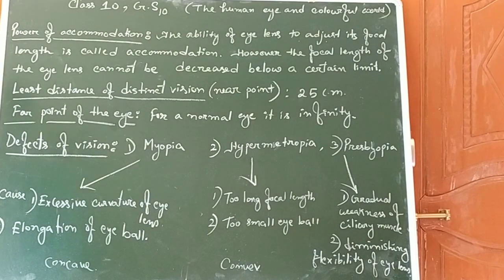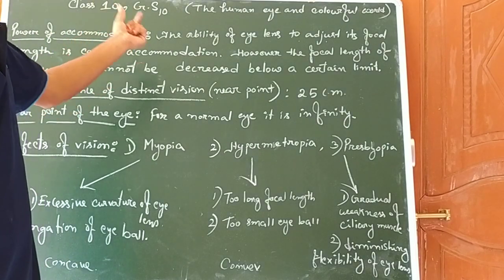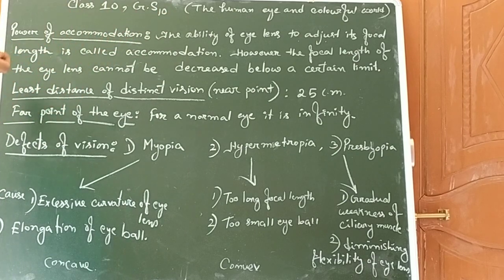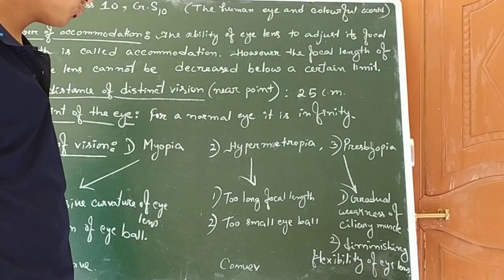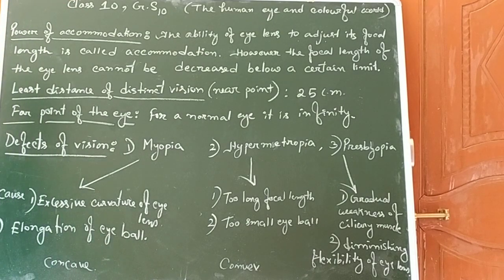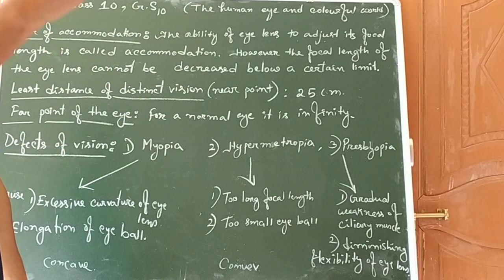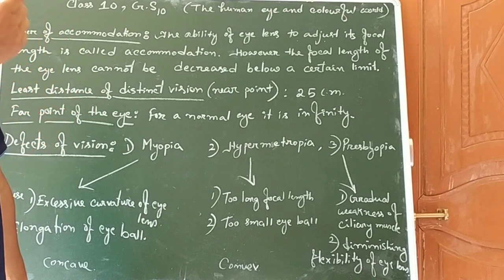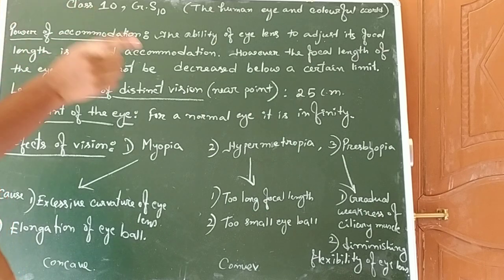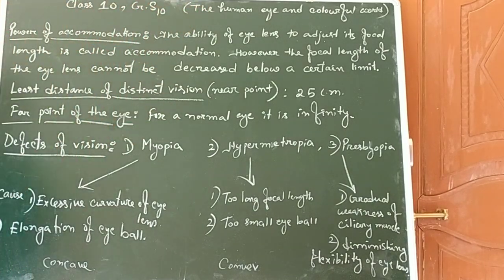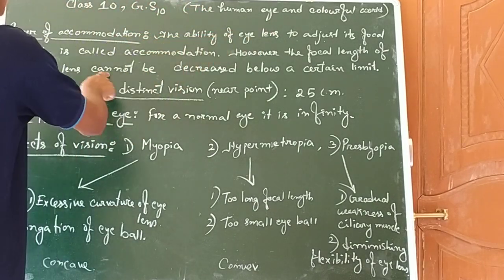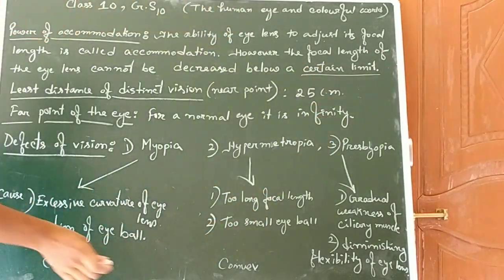Remember, this is very important. The ability of the lens to adjust its focal length is called accommodation. Now, the focal length of the lens cannot be decreased below a certain limit. When the object is too much nearer to us, we cannot see the object clearly, because there are certain limits.